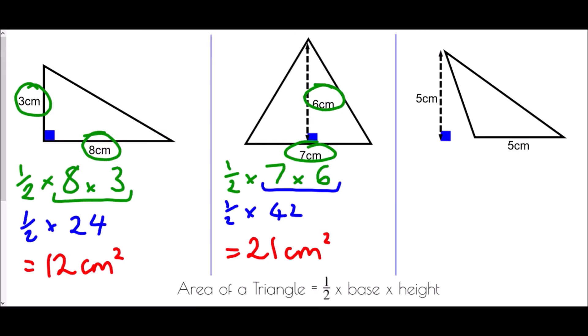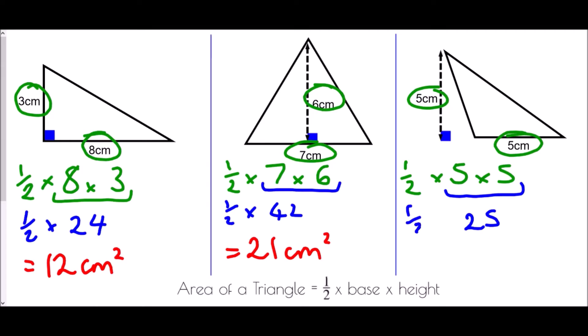Finally we have a scalene triangle. The height is marked outside of the diagram because we need to go from the very bottom of the shape to the very top — the perpendicular height at a right angle to the base. We have a half times the base of 5, times the height of 5. 5 times 5 is 25, and a half of 25 is 12.5 centimetres squared.